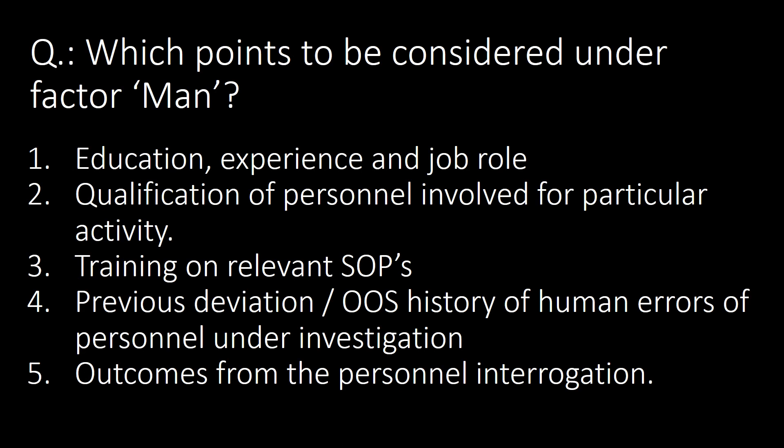Which points should be considered under the factor 'Man' in a fishbone diagram? Five major points: first, education, experience, and job role; second, qualification of personnel involved in the particular activity; third, training on relevant SOPs; fourth, previous deviation or out-of-specification history and human errors of the personnel under investigation; and fifth, outcomes from personal interrogation.